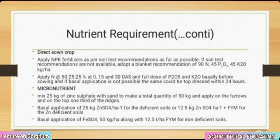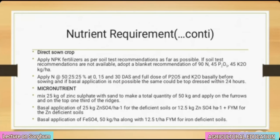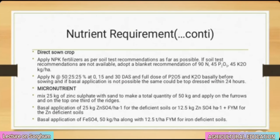Micronutrient management: mix 25 kg of zinc sulphate with sand to make a total quantity of 50 kg and apply on the furrows and on the top one-third of the ridges. Basal application of 25 kg zinc sulphate per hectare for deficient soils, or 12.5 kg zinc sulphate per hectare plus farmyard manure for zinc-deficient soils. Basal application of iron sulphate at 50 kg per hectare along with 12.5 tonnes per hectare farmyard manure for iron-deficient soils.